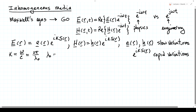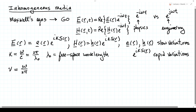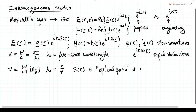Lambda zero is the free-space wavelength. The geometrical optics limit is when k goes to infinity, or equivalently lambda zero goes to zero. The frequency in hertz, denoted nu, is omega over 2 pi, and lambda zero is the speed of light c over that frequency nu. The scalar function s of r, which is also a real function of space, we're going to call the optical path. Since k has units of inverse meters, s must have units of meters.